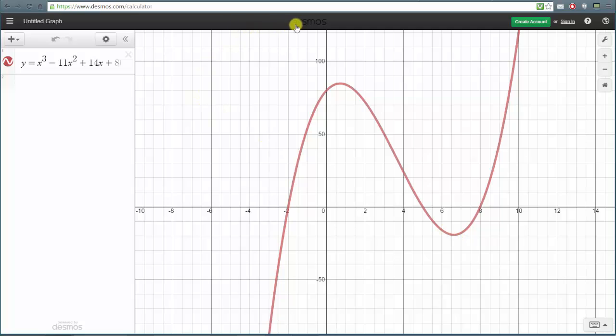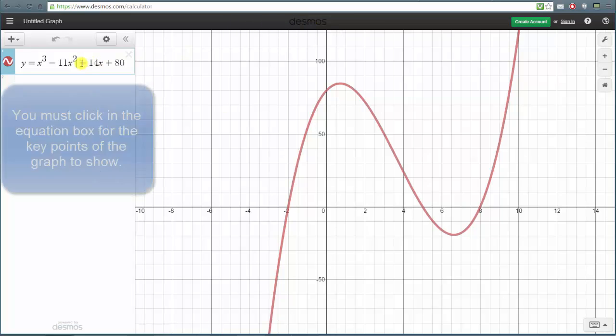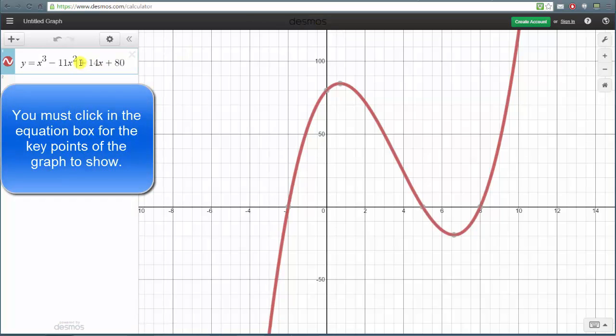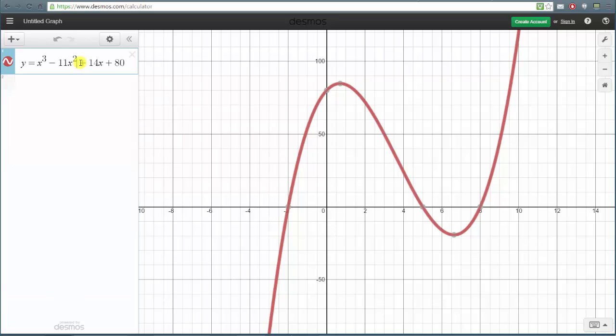One of the great features about the Desmos grapher is if we go back and click on the equation of the function, notice how several of the key points of the graph are now graphed in gray. If we scroll over those points, Desmos will give us the coordinates of these key points.